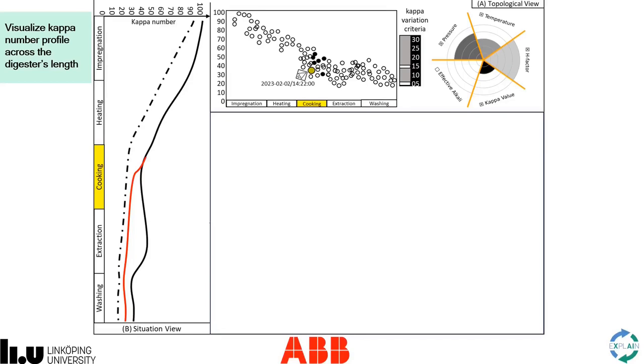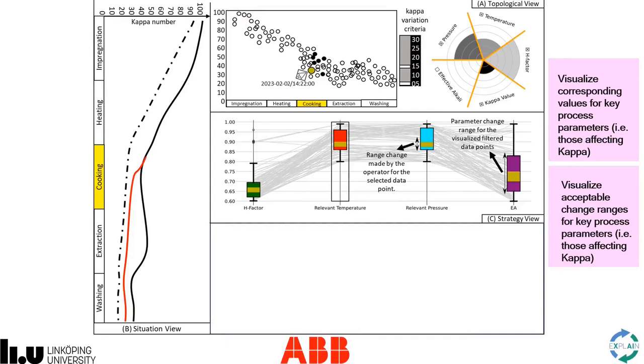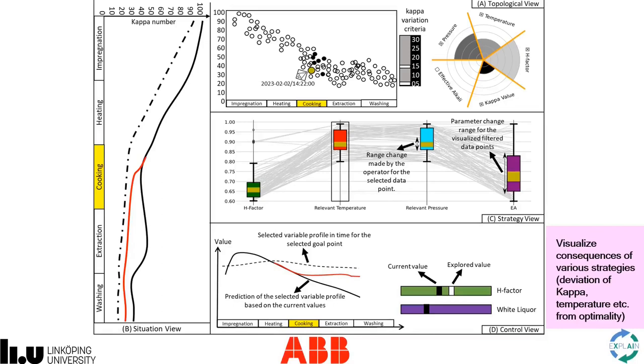The situation view shows the key performance parameter profile, the strategy view shows variation limits for relevant parameters, and the control view shows the consequences of the selected strategy.